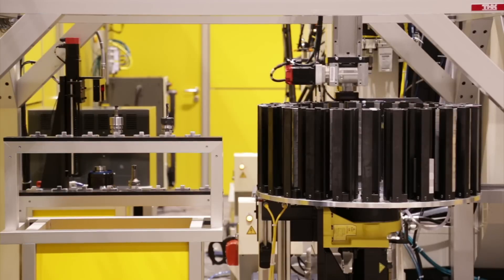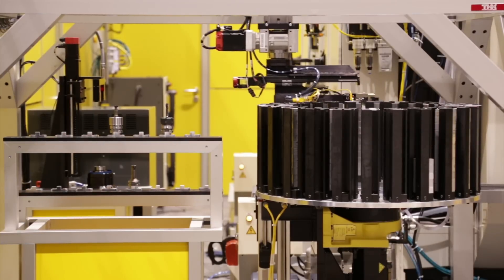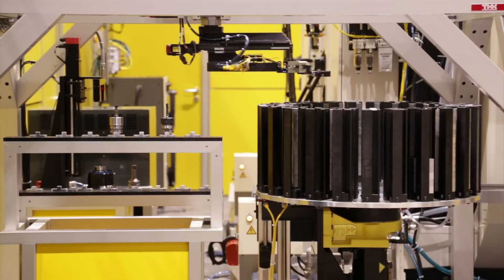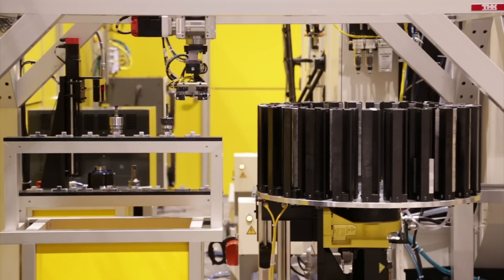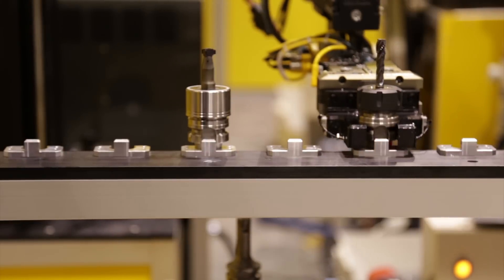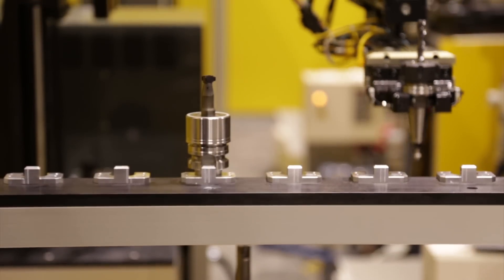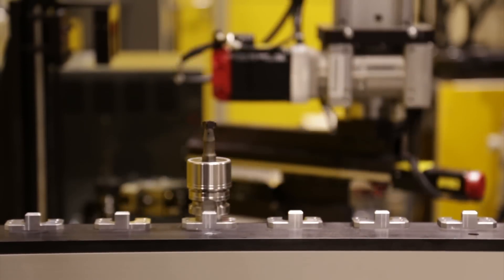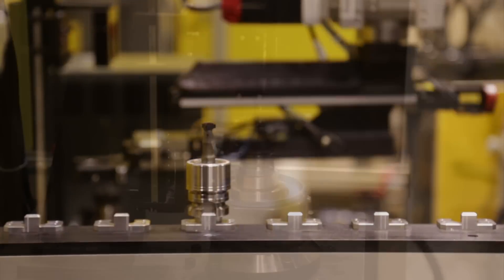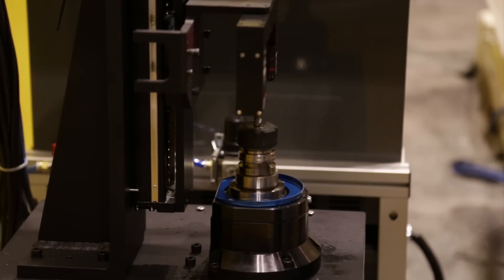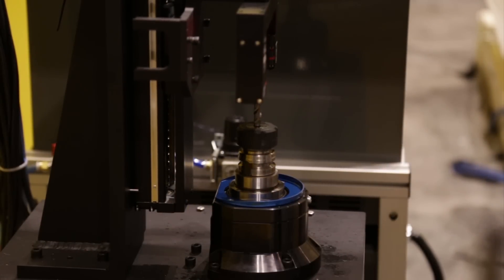This cart of tools is tended by a gantry system provided by THK, which has the ability to pick the tools and place them into and out of a tool length setter. The tool length setter checks tools for wear and can determine if any given tool still has life.